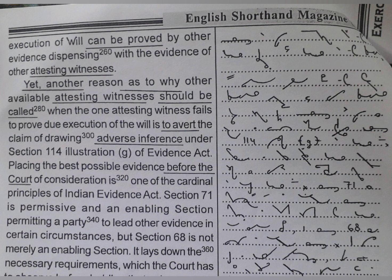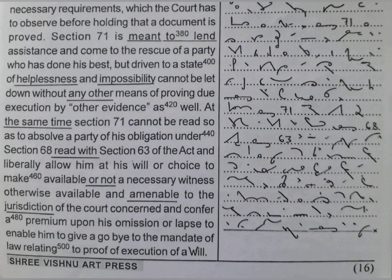Placing the best possible evidence before the court of consideration is one of the cardinal principles of the Indian Evidence Act. Section 71 is permissive and an enabling section, permitting a party to lead other evidence in certain circumstances, but Section 68 is not merely an enabling section. It lays down the necessary requirements which the court has to observe before holding that a document is proved. Section 71 is meant to lend assistance and come to the rescue of a party who has done his best but, driven to a state of helplessness and impossibility, cannot be let down without any other means of proving due execution by other evidence as well.